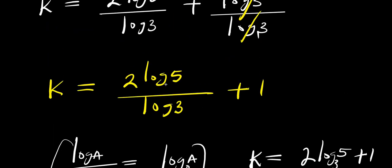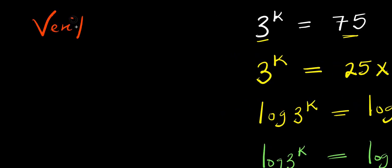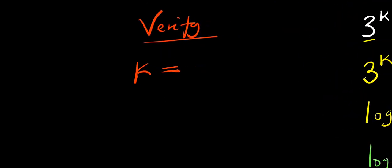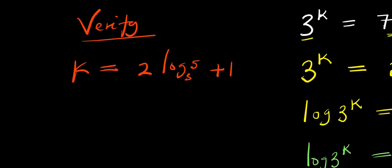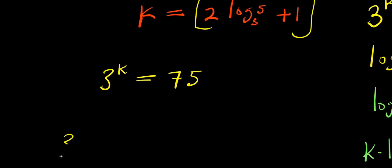This becomes our answer. I would like to verify if my answer is correct. My k equals 2 times log 5 over log 3 plus 1. To confirm the solution, substituting back: 3 to the power of 2 times log 5 over log 3 plus 1 equals 75.